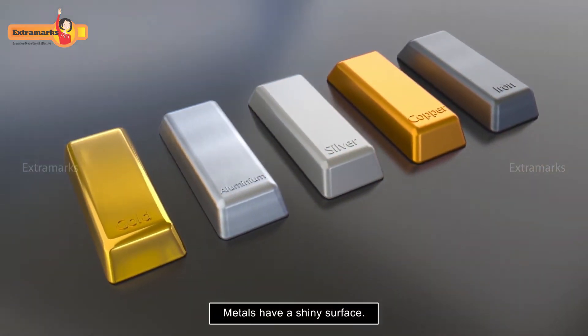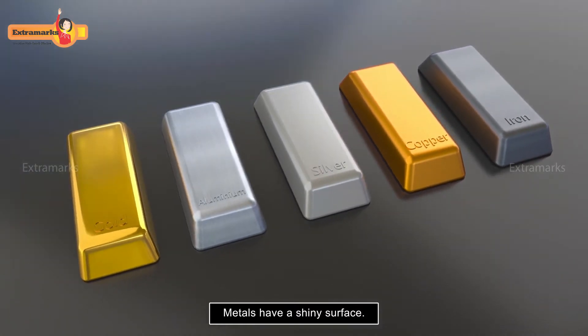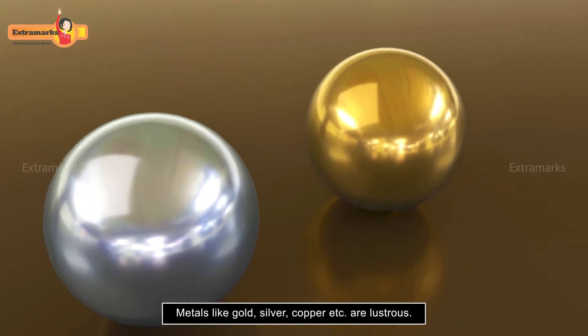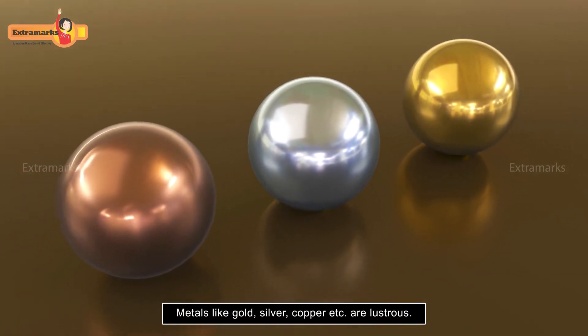Metals have a shiny surface. This property is called metallic luster. Metals like gold, silver, copper, etc. shine and reflect light, hence they are lustrous.